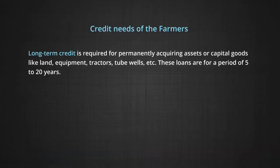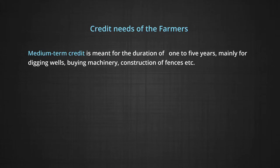On the basis of time period, credit needs of the farmers are classified into three categories. Long-term credit is required for permanently acquiring assets or capital goods like land, equipment, tractors, tube wells, etc. These loans are for a period of 5 to 20 years. Medium-term credit is meant for a duration of 1 to 5 years, mainly for digging wells, buying machinery, construction of fences, etc.